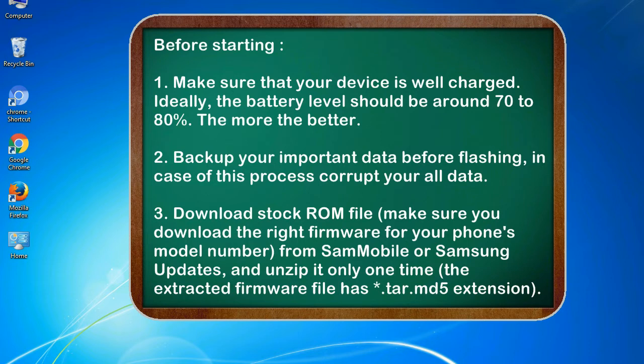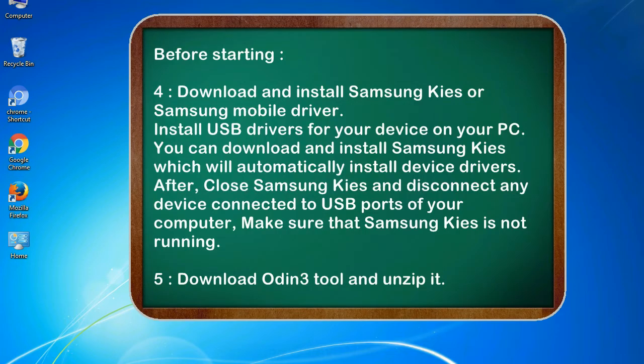3. Download the stock ROM file. Make sure you download the right firmware for your phone's model number from Samaba or Samsung updates, and unzip it only one time. The extracted firmware file has a *.tar.md5 extension. 4. Download and install Samsung KIES or Samsung mobile driver. Install USB drivers for your device on your PC. You can download and install Samsung KIES, which will automatically install device drivers.